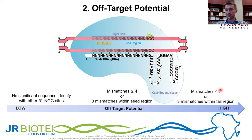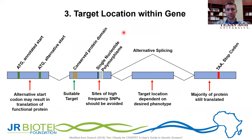Basically, if you have a guide RNA with fewer than three mismatches, and specifically those mismatches are within the tail region, then there is a high likelihood of off-target potential. If you have more than four mismatches and at least three of those are within the seed region, then your off-target potential is lowered. And if you have no significant sequence identity with any other sites immediately 5-prime of a PAM NGG site, then you have no or very low chance of off-target potential.